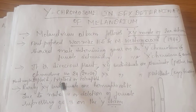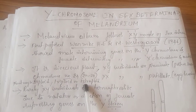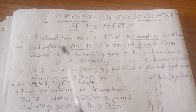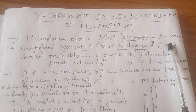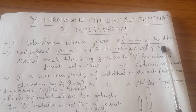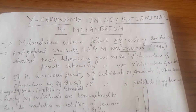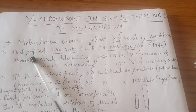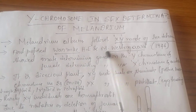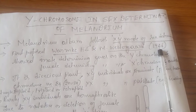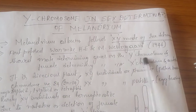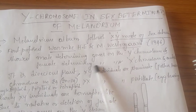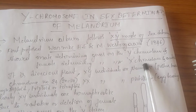This plant may be diploid, triploid, or tetraploid. In case of Melandrium album, they follow the XY mode of sex determination, similar to Drosophila and human beings. It was first proposed by Wormky H.E. and M. Westergaard in 1946, and they showed that male-determining genes are present on the Y chromosome and female-determining genes are present on the X chromosome.